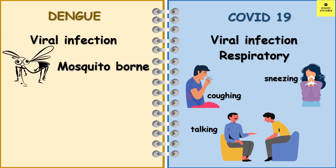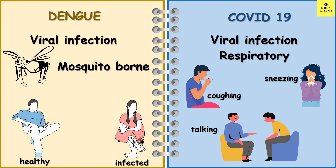But dengue is a mosquito-borne disease — the mode of transmission is mosquito. When a mosquito bites an infected person, it carries the dengue virus with it, and then when it bites a healthy person, the virus gets injected inside that healthy person and that person becomes infected.